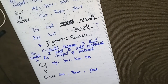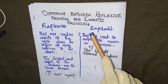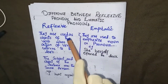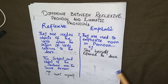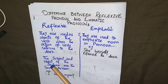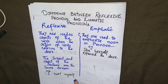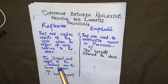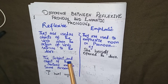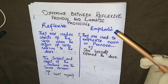Now let's discuss the difference between reflexive and emphatic pronouns so you don't get confused. In a reflexive pronoun, they are used as objects of the verb when the action returns to the subject — the subject and object of the sentence are the same person, for example: 'I hurt myself.' Here 'I' and 'myself' are the same — that is reflexive pronoun.